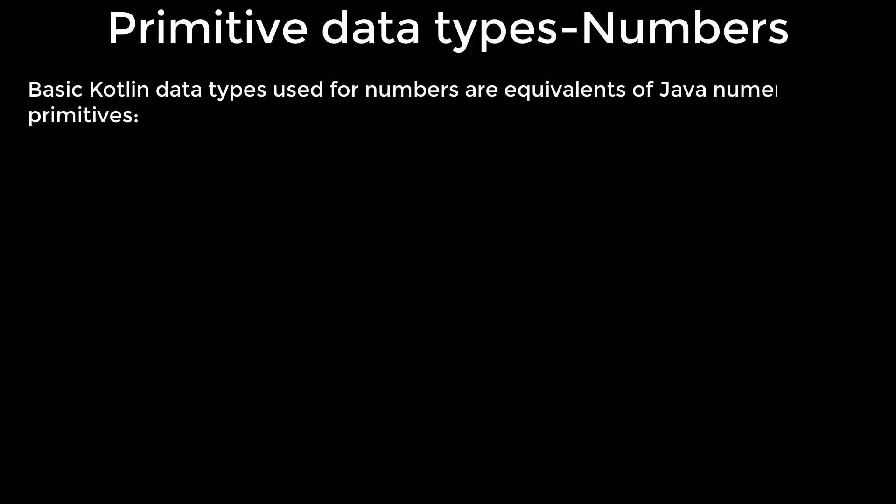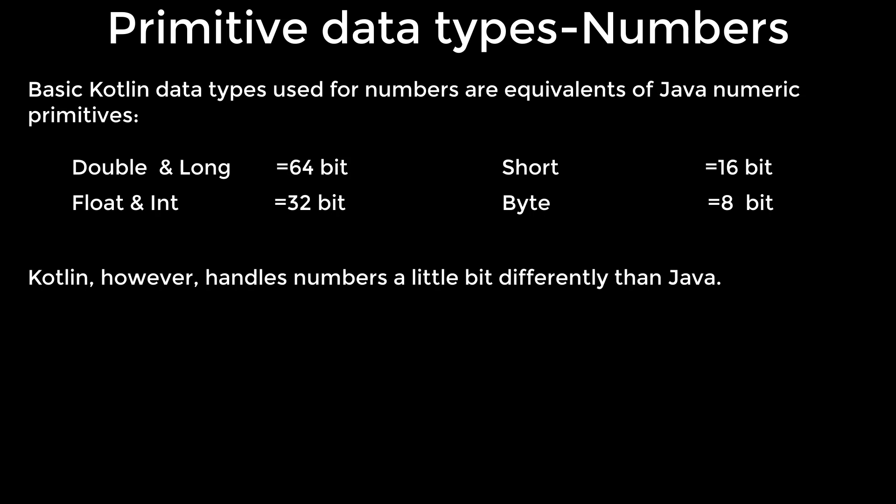Numbers: basic Kotlin data types used for numbers are equivalents of Java numeric primitives. Kotlin, however, handles numbers a little bit differently than Java. The first difference is that there are no implicit conversions for numbers. Smaller types are not implicitly converted to bigger types.